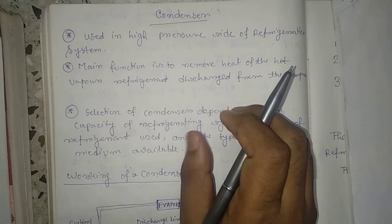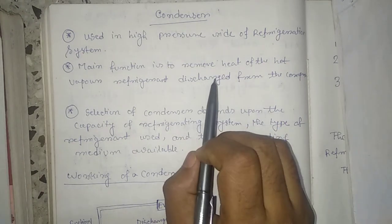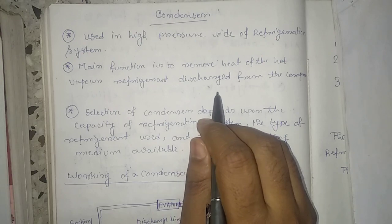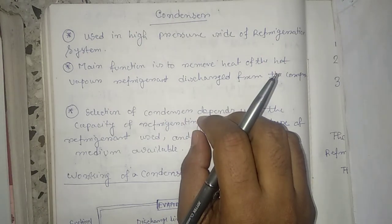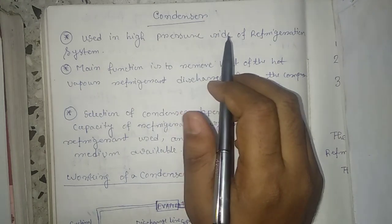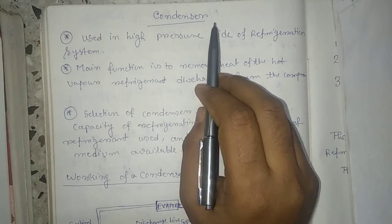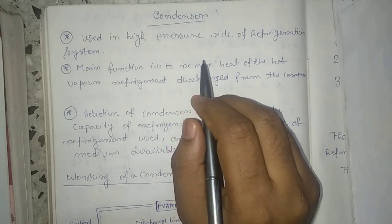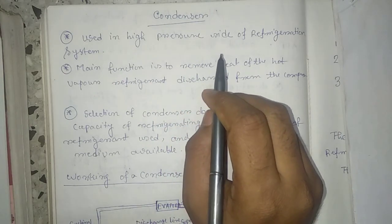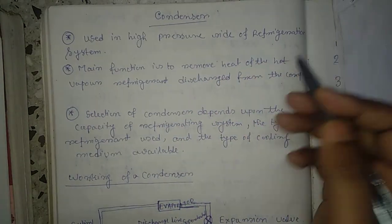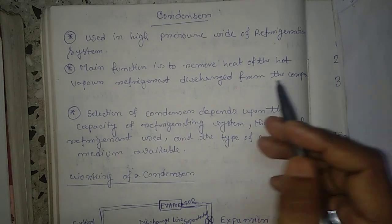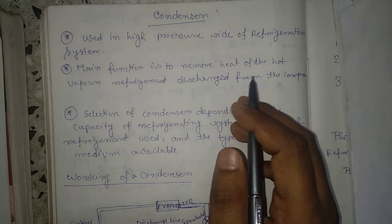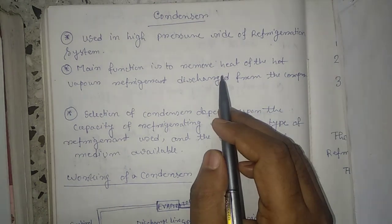We already discussed compressors in the previous lecture video. Now in this lecture we will discuss condensers. A condenser is an important device used in the high pressure side of the refrigeration system. There are two sides: the low pressure side and the high pressure side — the condenser operates on the high pressure side.